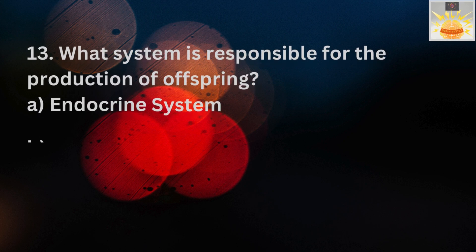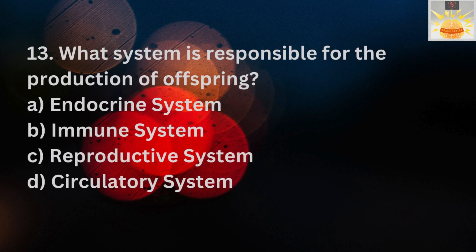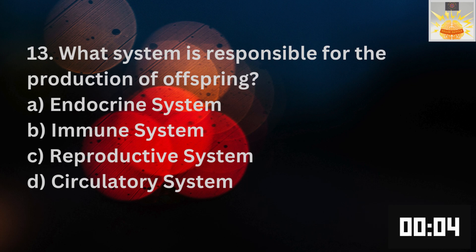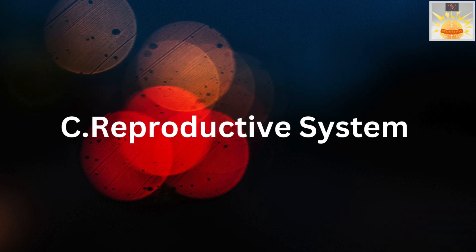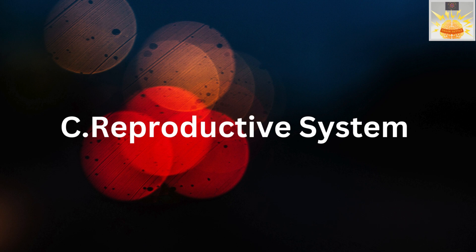Question 13. What system is responsible for the production of offspring? A. Endocrine system. B. Immune system. C. Reproductive system. D. Circulatory system. And the right answer is C. Reproductive system. Now over to Mike for the next question.